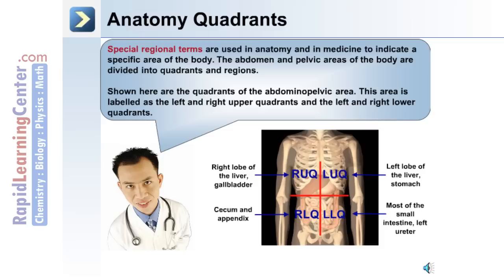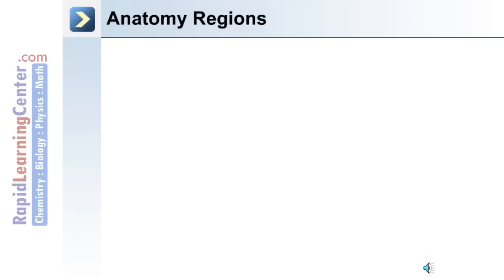On the right side of the image as you look at it is the left upper quadrant, and beneath that the left lower quadrant. The organs that correspond to these areas include the right lobe of the liver and gallbladder for the right upper quadrant. For the right lower quadrant: the cecum and appendix. The left lobe of the liver and the stomach are in the left upper quadrant, and most of the small intestine and the left ureter are in the left lower quadrant.